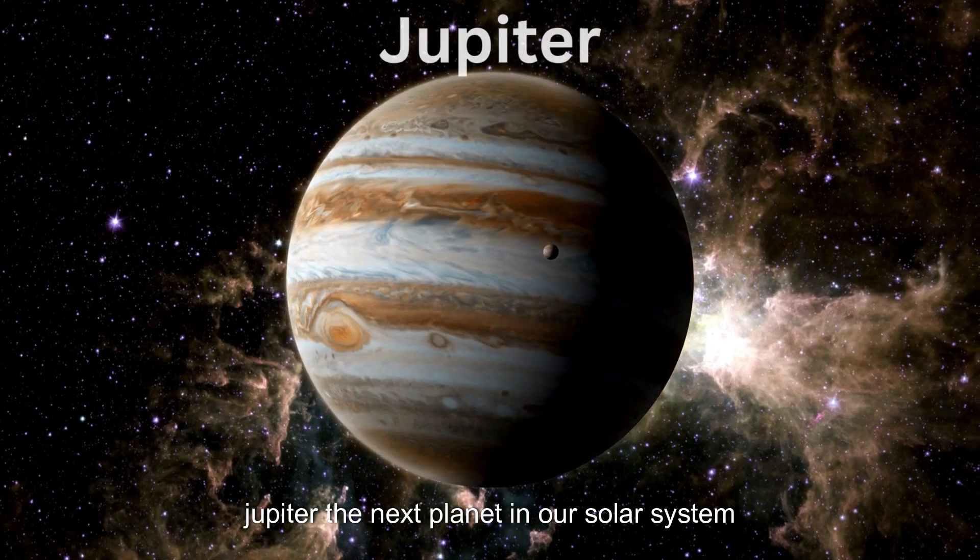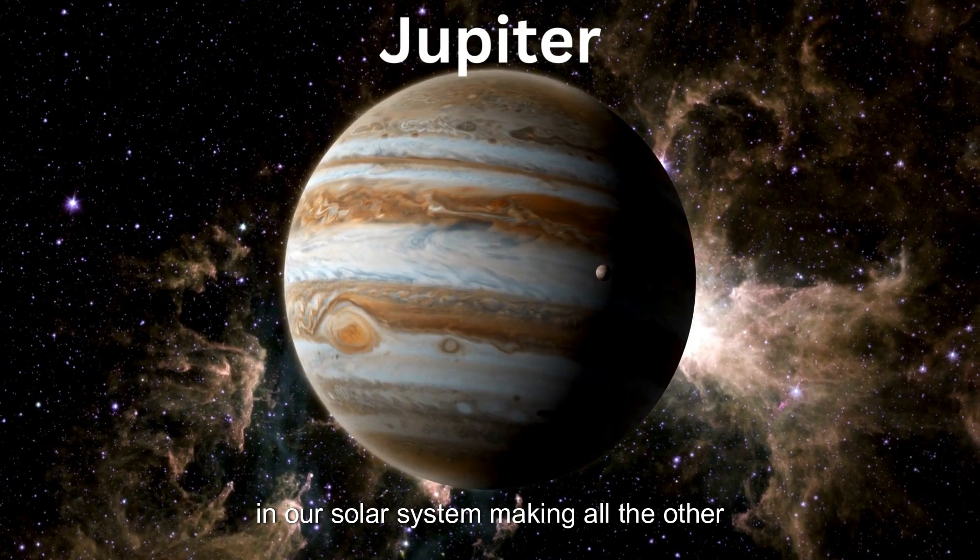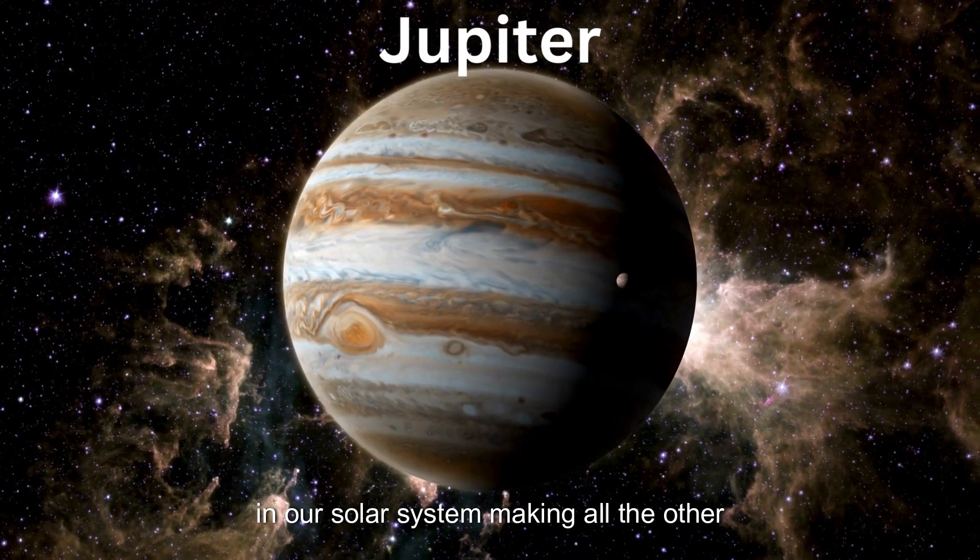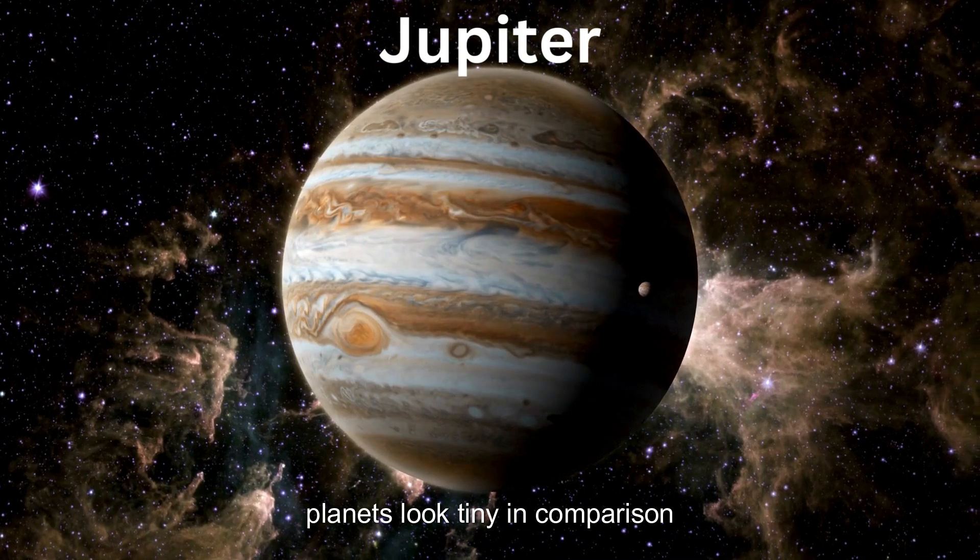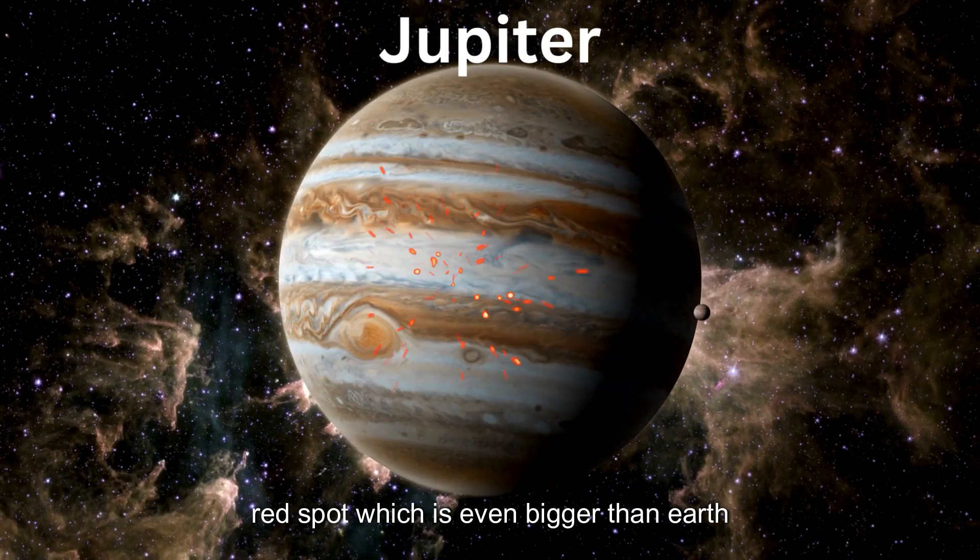Jupiter, the next planet in our solar system, is pretty amazing. It's the biggest planet in our solar system, making all the other planets look tiny in comparison. It has a gigantic storm called the Great Red Spot, which is even bigger than Earth.